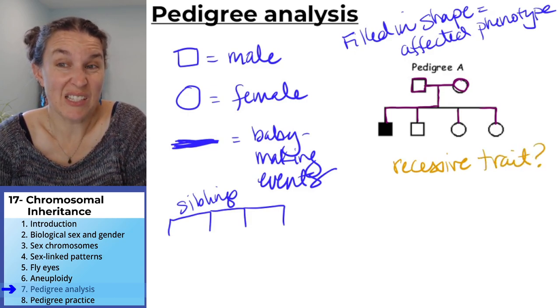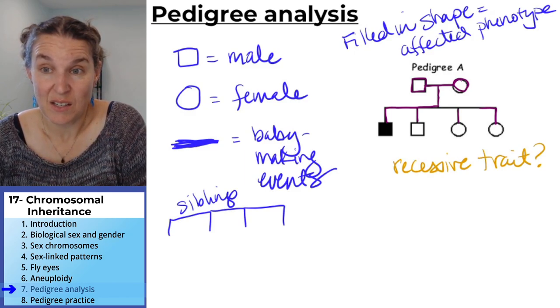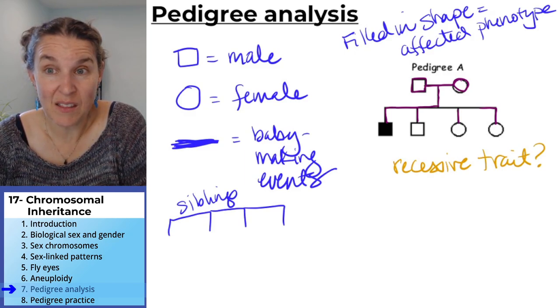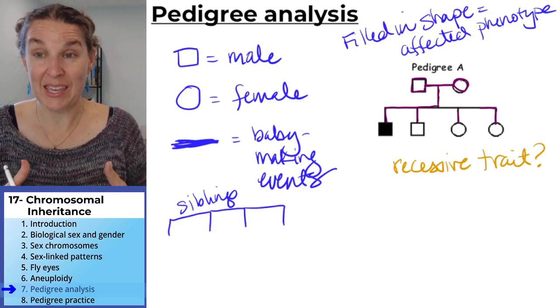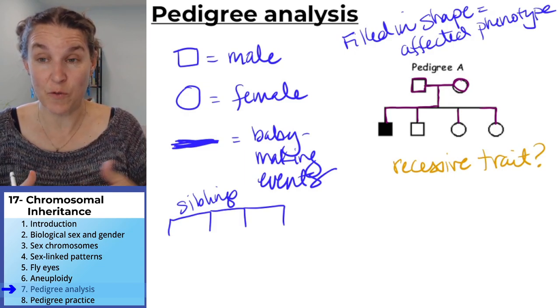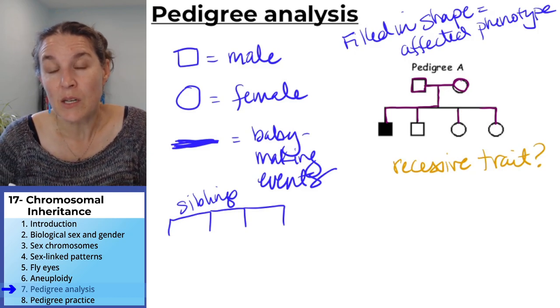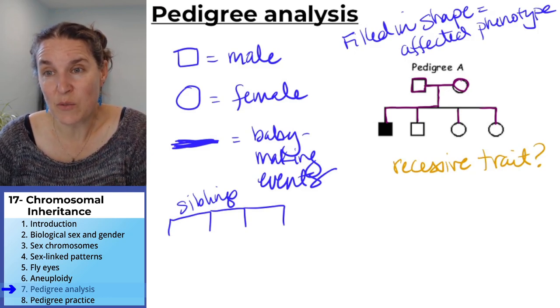Because we have one affected kid that somehow got its genetics from its parents. So we have, the trait is recessive.